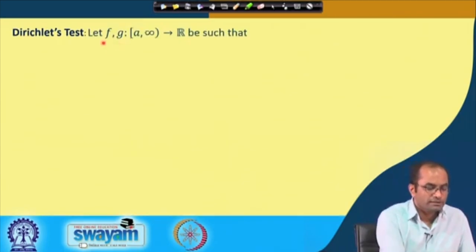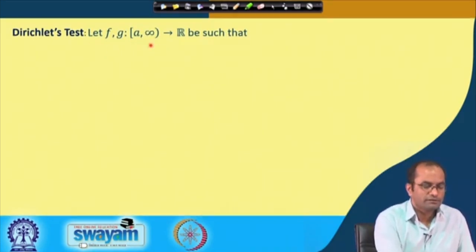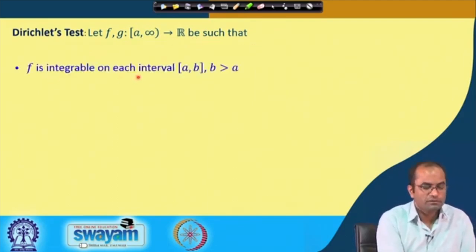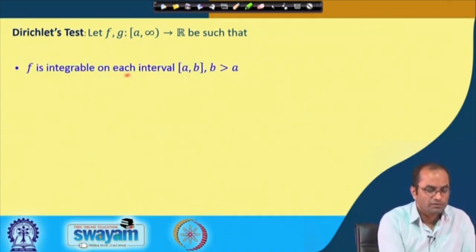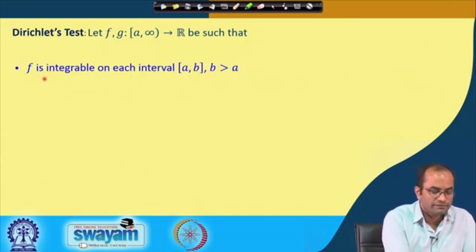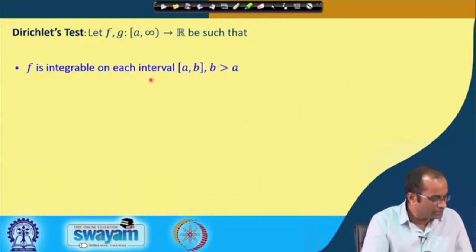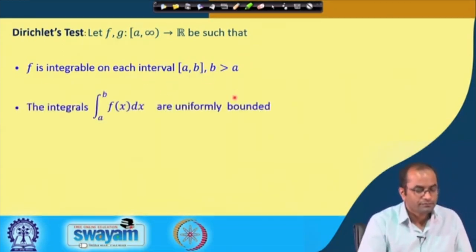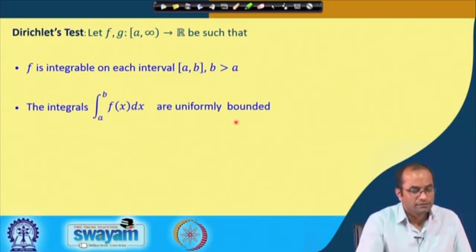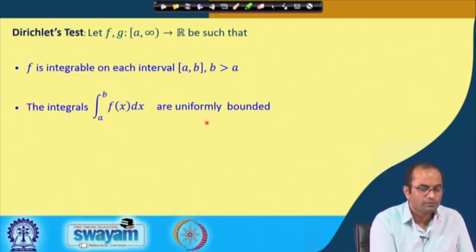Here we suppose that f and g are two functions defined from a to infinity, taking real values, such that f is integrable on each interval a to b, where b can take any value greater than a. The second condition is that the integrals of f from a to b are uniformly bounded.